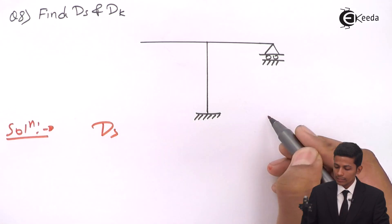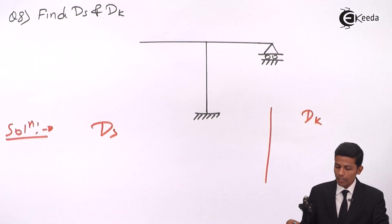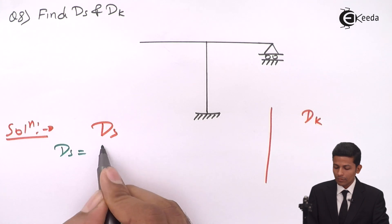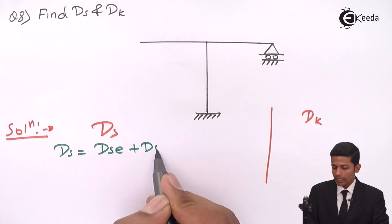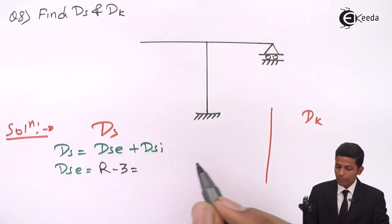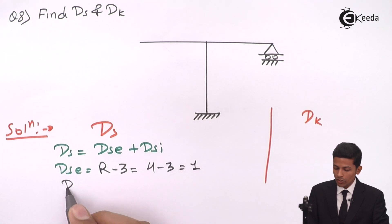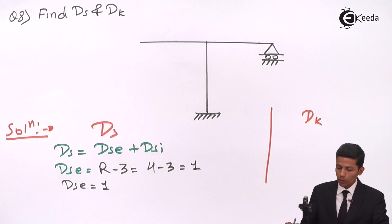Write Ds and Dk over here. Ds formula will be Dse plus Dsi. Your Dse will be R minus 3. Reactions will be 3 plus 1 = 4. 4 minus 3 equal to 1, means your Dse will be 1.